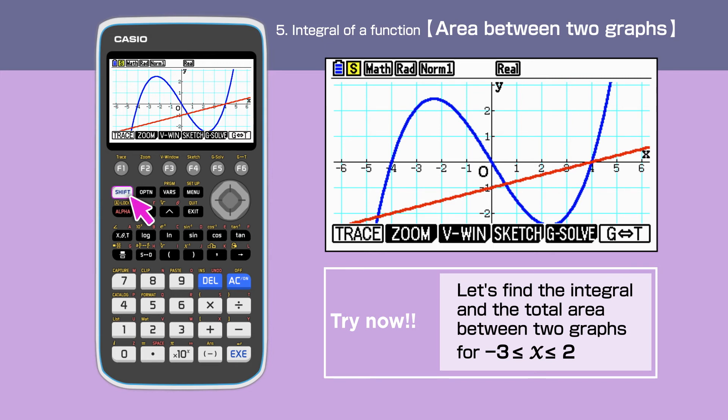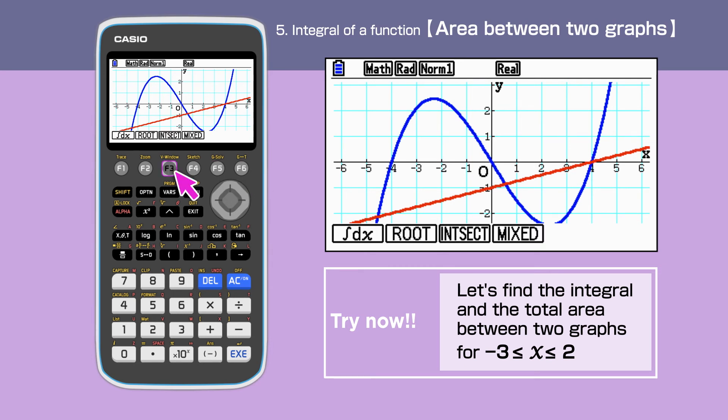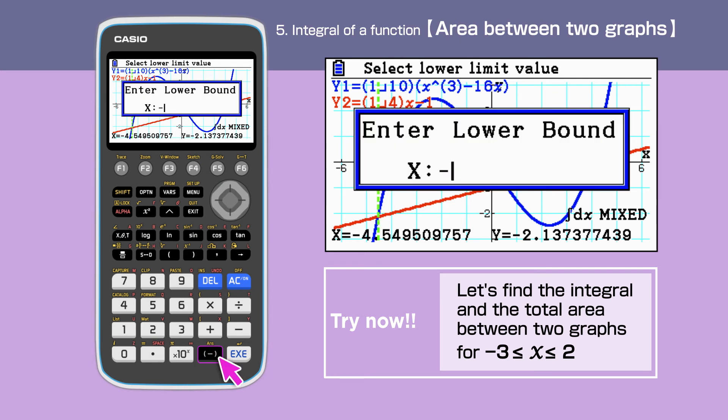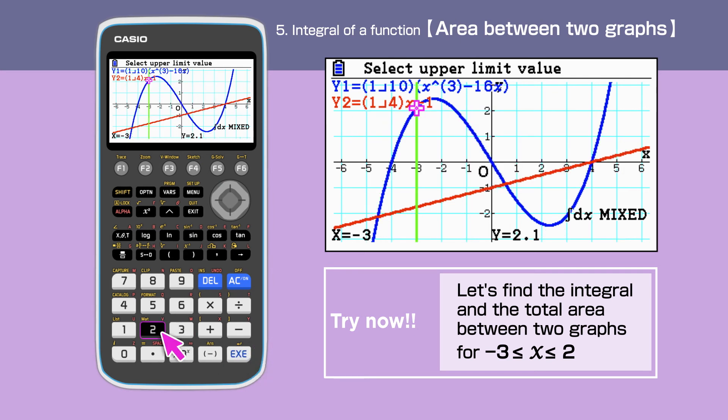Press Shift, F5 to select G solve, then F6, F3 to choose the integration command. Enter F4, mixed, then minus 3 for lower bound, 2 for upper bound.